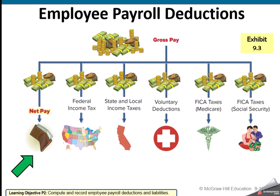For instance, at Stark State we give to the United Way and to our scholarship foundation — those are voluntary deductions; I don't have to do them, but I do. Then FICA tax — Medicare and Social Security — those might go to one general ledger account because they get paid out to the same IRS.